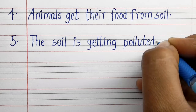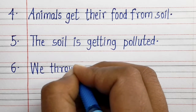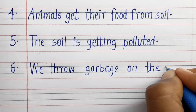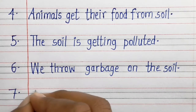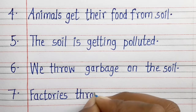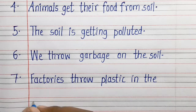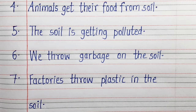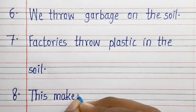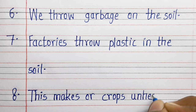Fifth line: the soil is getting polluted. Sixth line: we throw garbage on the soil. Seventh line: factories throw plastic in the soil. Eighth line: this makes our crops unhealthy.